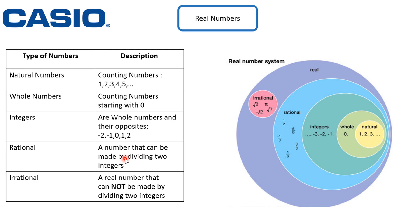Examples of irrational numbers include radical two, radical seven, pi, and e. As you can see from the figure, natural numbers are subsets of whole numbers, whole are subsets of integers, integers are subsets of rational, and rational are subsets of real. Irrationals are also subsets of real. There is no intersection between irrational numbers and rational numbers.